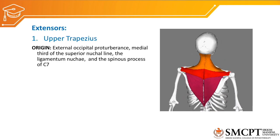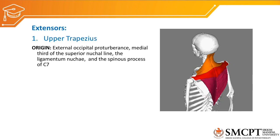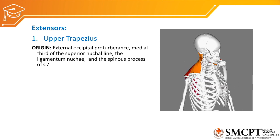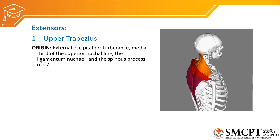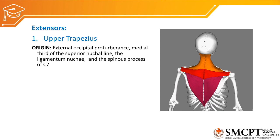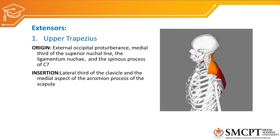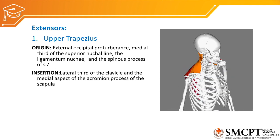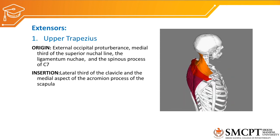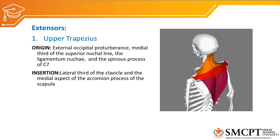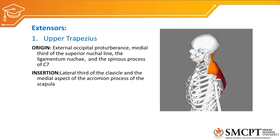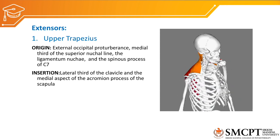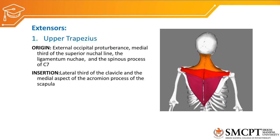The trapezius originates from the occipital protuberance, medial third of the superior nuchal line, the ligamentum nuchae, and the spinous process of C7. It inserts to the lateral third of the clavicle and the medial aspect of the anterior acromion process of the scapula. It is responsible for creating extension.